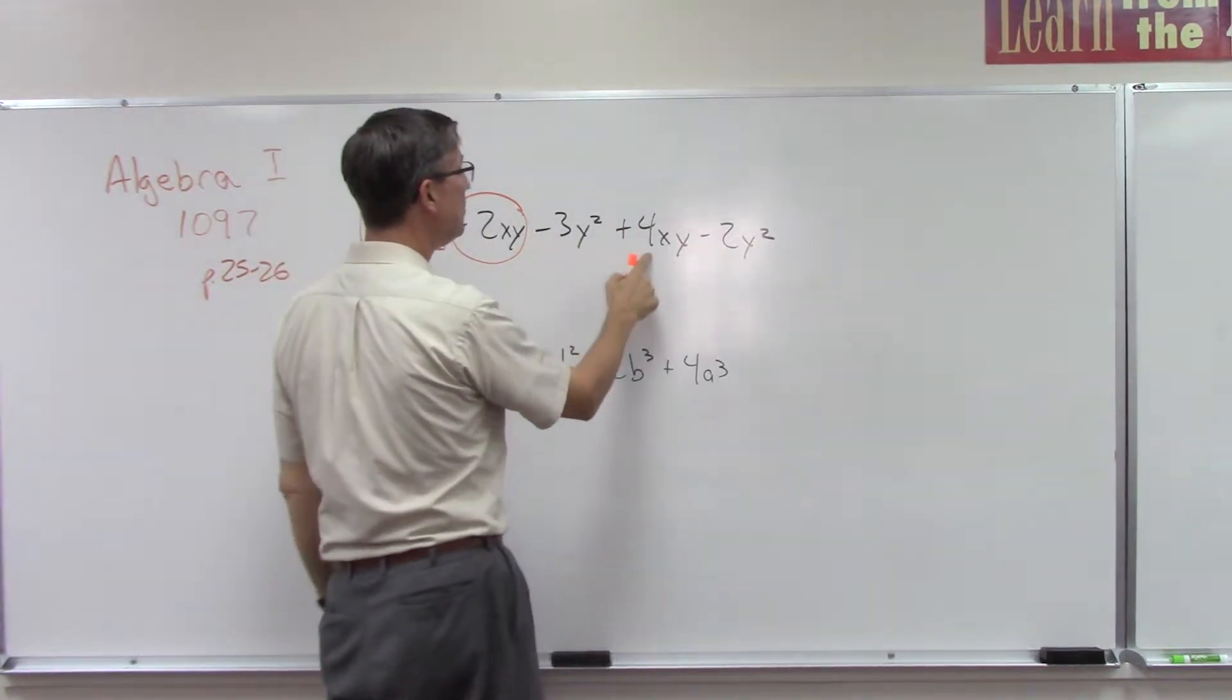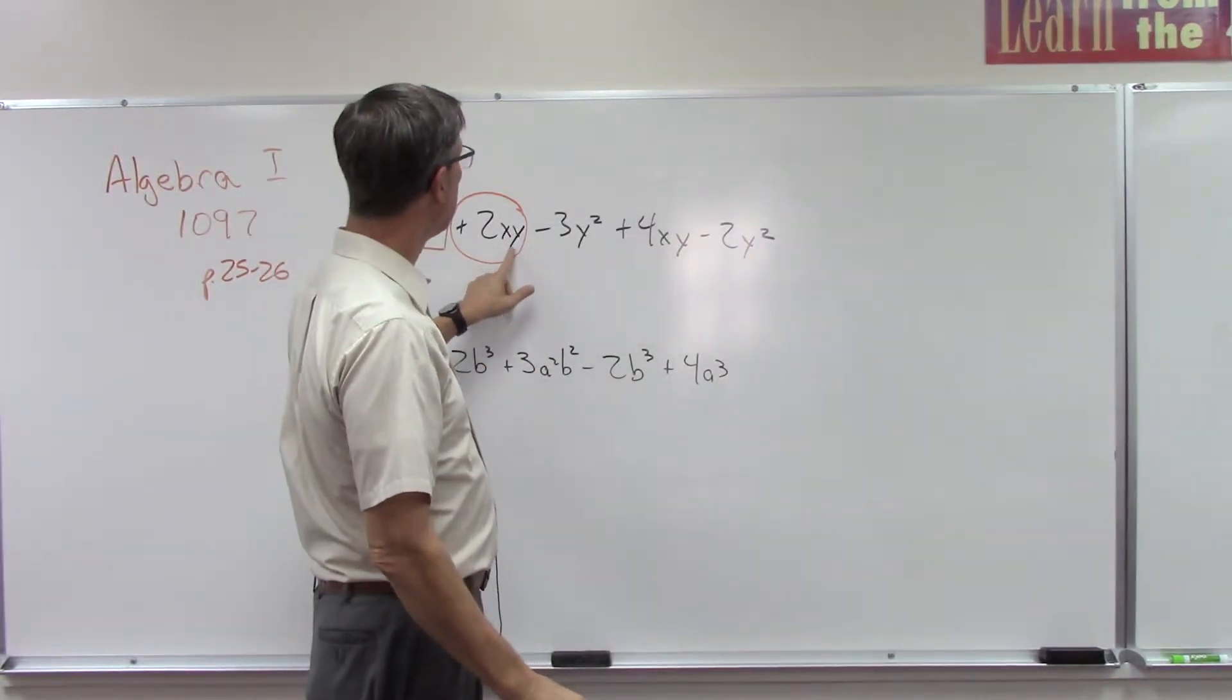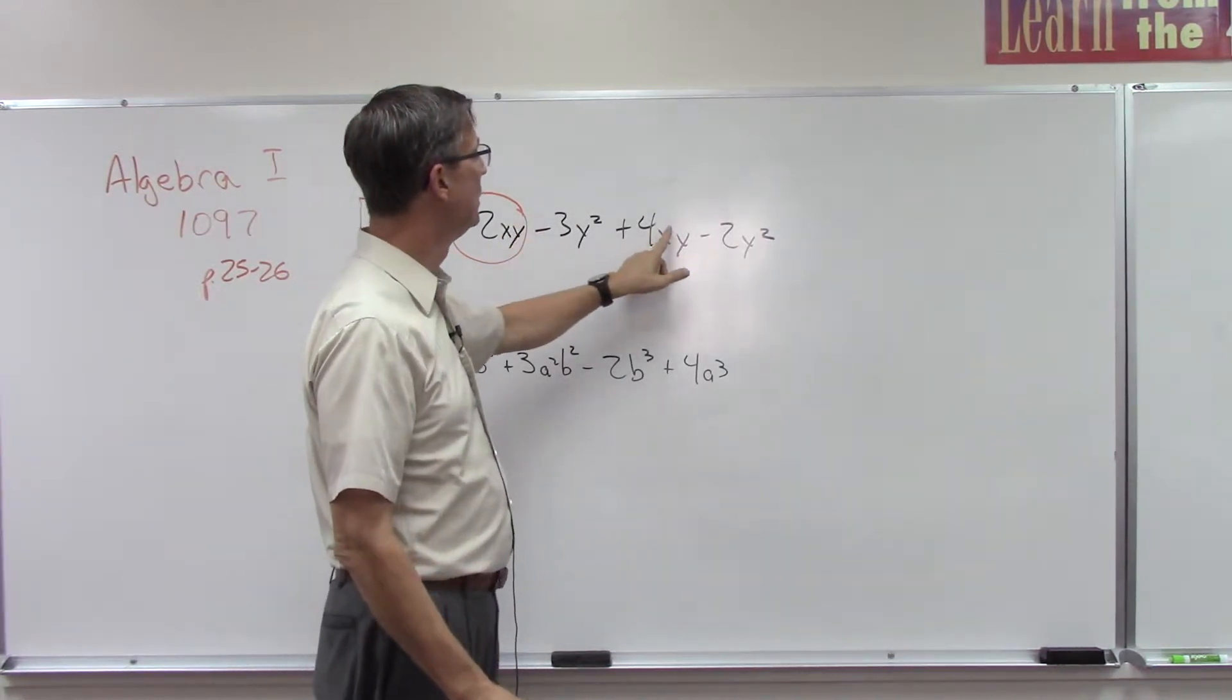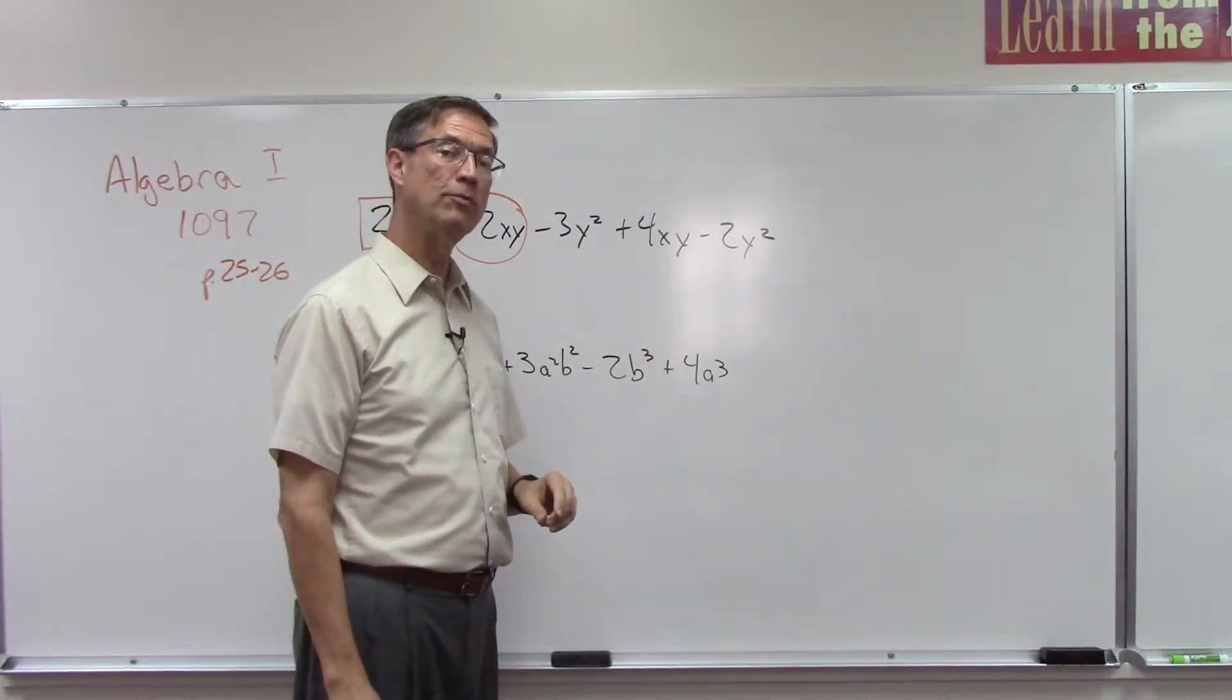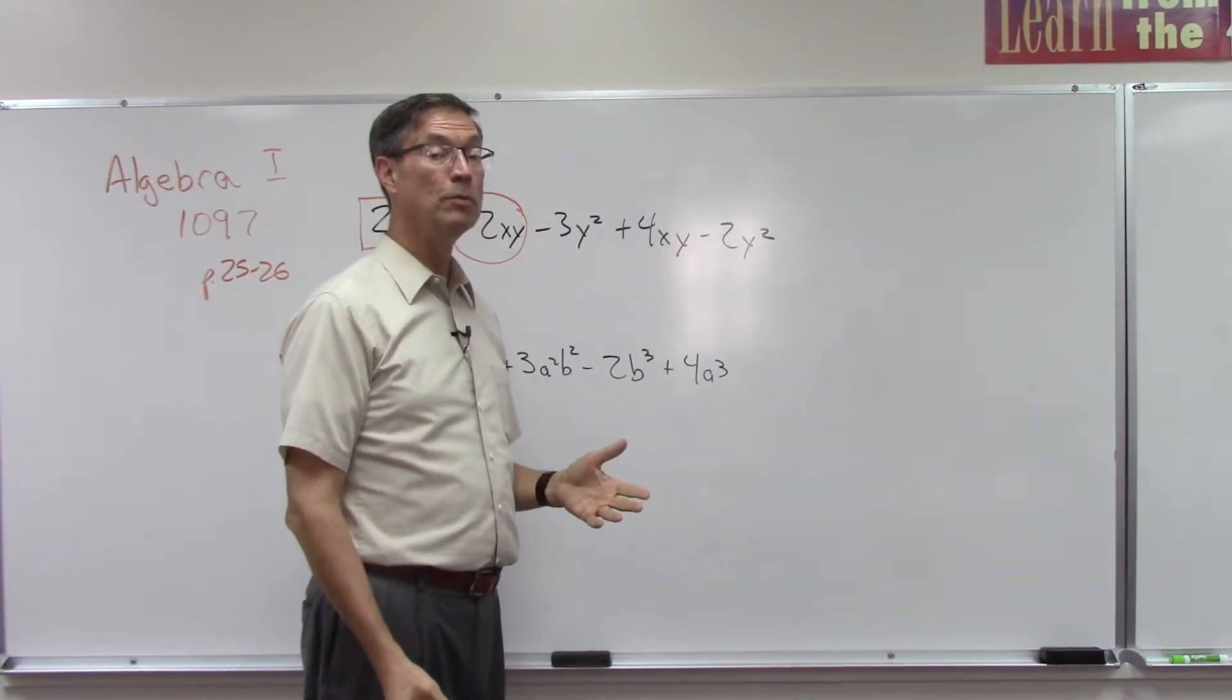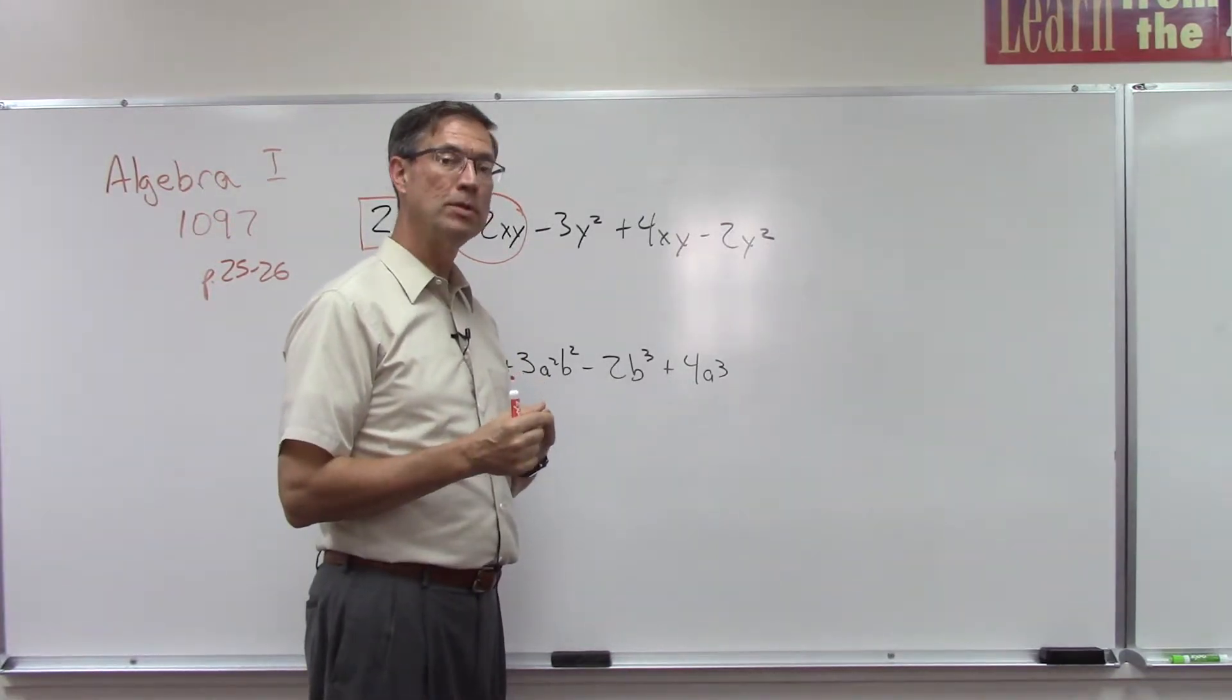This is not a like term. This one is a like term with this, okay? They both have the same variables x and y, and they both have the same exponents, one and one. Would it matter if this said 4yx instead of 4xy? No, actually it wouldn't. It'd still be a like term because like terms are: do they have the same letters, the same variables, and are they raised to the same exponent?